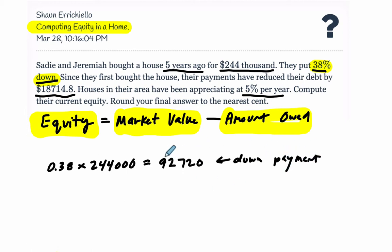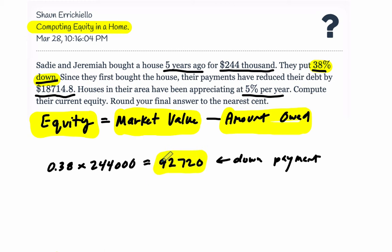Now, if they were to turn around and we asked what's their equity at that point, it's just the $244,000 — the value they bought it for — minus their remaining debt. So you'd do $244,000 minus $92,720, whatever that number is, that's money they still owe. Take it away from their market value and you should get $92,720, because they only own what they paid down on the house. That's their equity. So in the beginning, down payment equals equity.